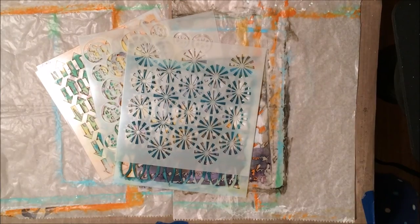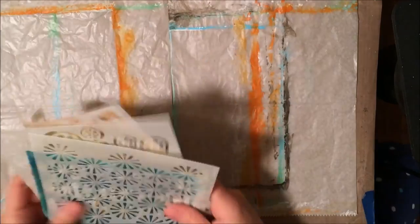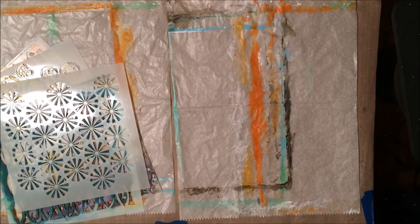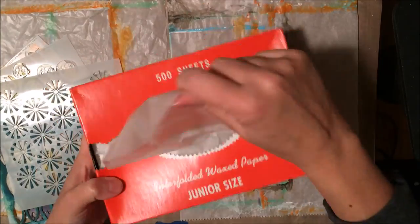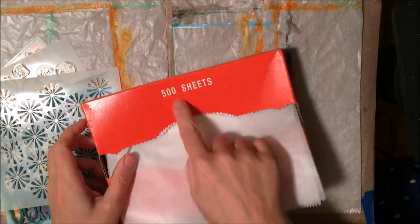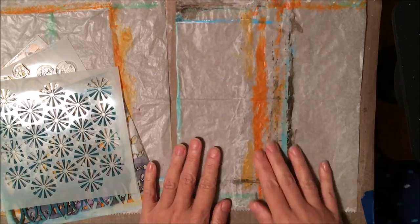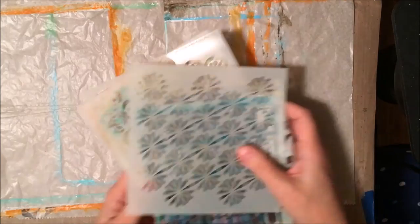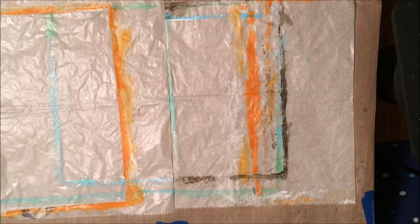So this project was inspired by a video I saw from Julie Fei-Fan Balzer using some deli paper. So this is the way the deli paper comes. You can buy it on Amazon and you get 500 sheets in that box. So it's a great product that you'll have around for a while.